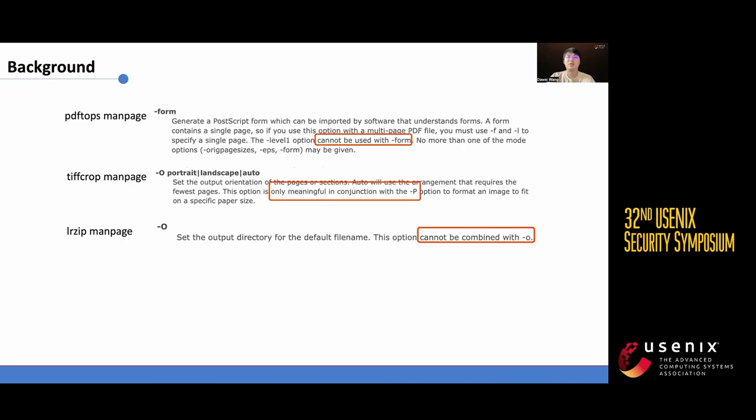Typically, such relationships are documented explicitly. Failing to satisfy these relationships may cause the program to terminate prematurely, hindering the exploration of deeper paths. Building upon this discovery, we can extract these relationships from the documentation, which helps reduce the number of option combinations that need to be tested.